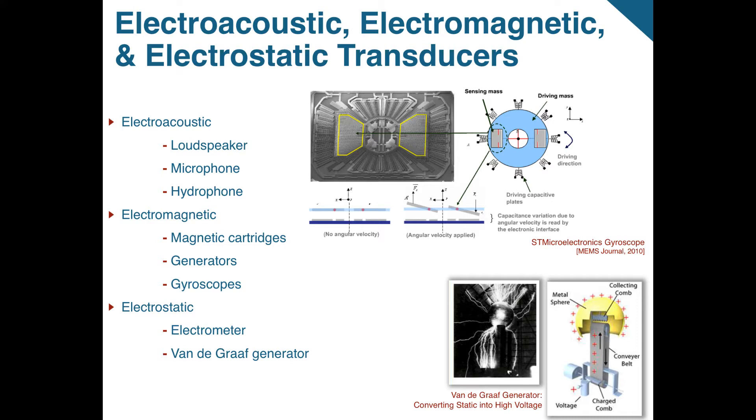Common electrostatic transducers include the electrometer, which converts static or energy from a vibrating ring into electricity, and the Van de Graaff generator, which converts a buildup of static charge into high voltage. MEMS electrostatic transducers are found in MEMS resonators, on-off valves for fuel injection, and drop ejectors that use an electrostatically driven piston. A common electrostatic microtransducer is the comb drive. Refer to the Introduction to Transducers lesson to learn how a MEMS comb drive works.